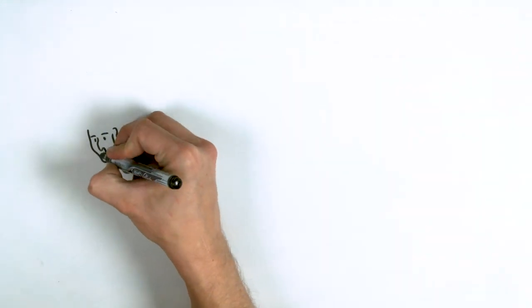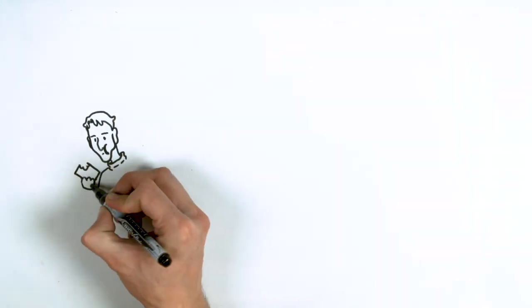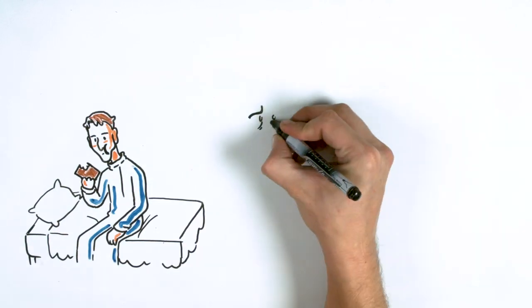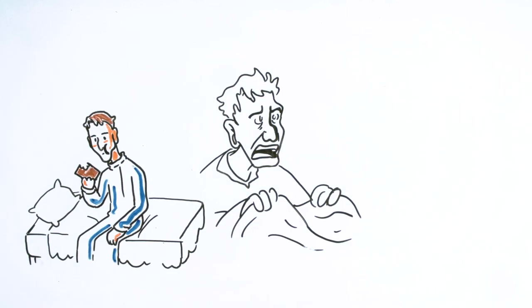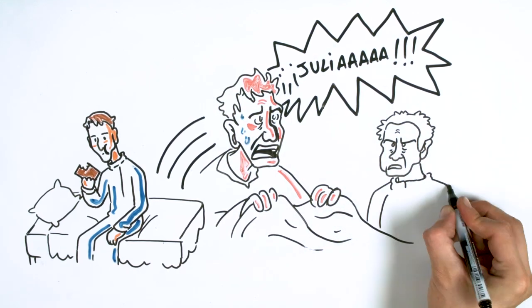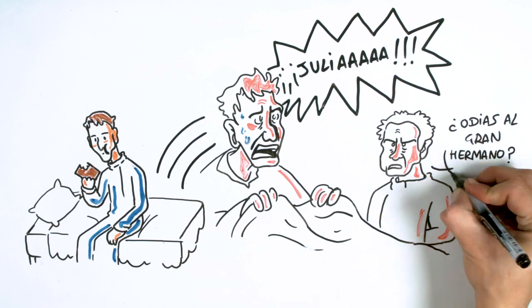After this, Winston was changed to a better cell where they fed him and gave him hot water to clean himself. He was much better until one day he woke up screaming Julia's name. He still loved her. Minutes later, O'Brien was in the cell, asking if he hated Big Brother. Winston answered yes.